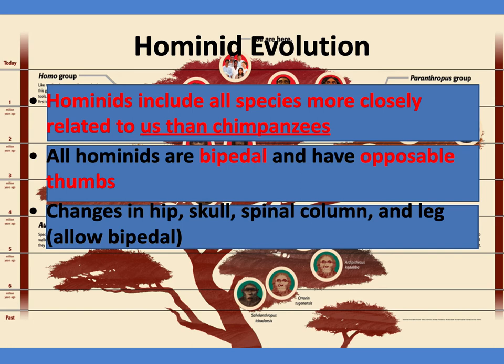Don't think that chimpanzees being our closest living relative makes them our closest relative overall. It just means if you go back in the tree, there's a branch that leads up to bonobos, chimpanzees, and a lot of other apes — but not directly related to us.